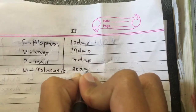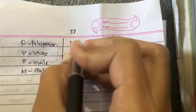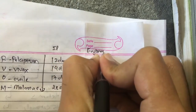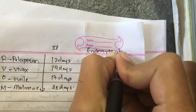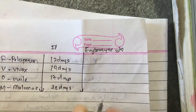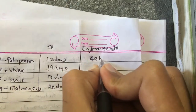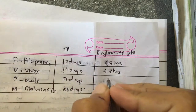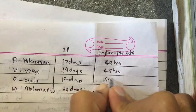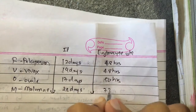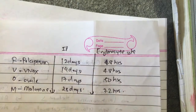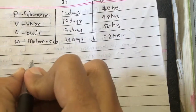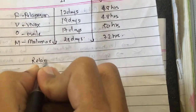The erythrocytic cycle also increases in the same order. It is 48 hours for falciparum, 48 hours for vivax, 50 hours for ovale, and 72 hours for malaria.